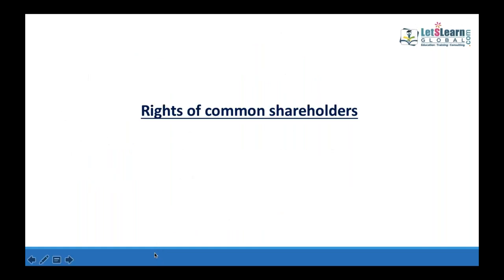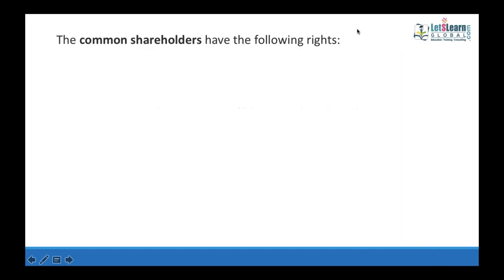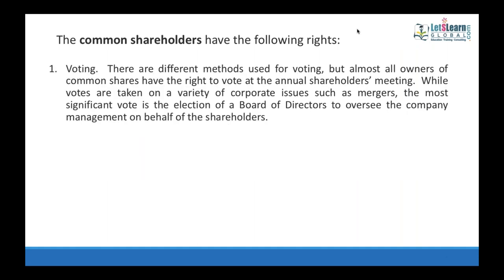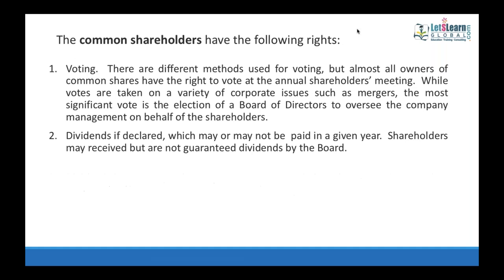Rights of common shareholders: the common shareholder is the ultimate owner of the business. He has the right to participate in the management of the company, cast votes, elect directors, or himself become a director. Common shareholders have voting rights to participate in company operations, to elect directors, and to be elected as directors.